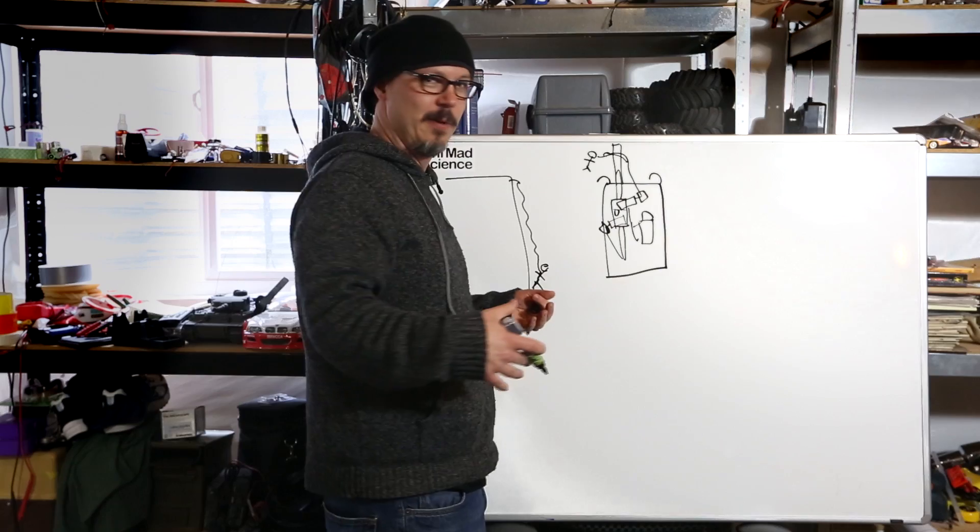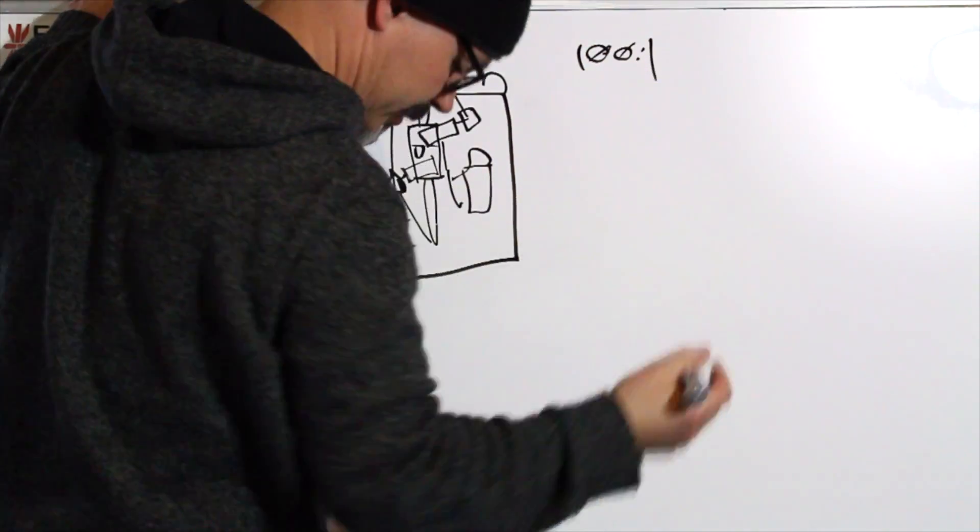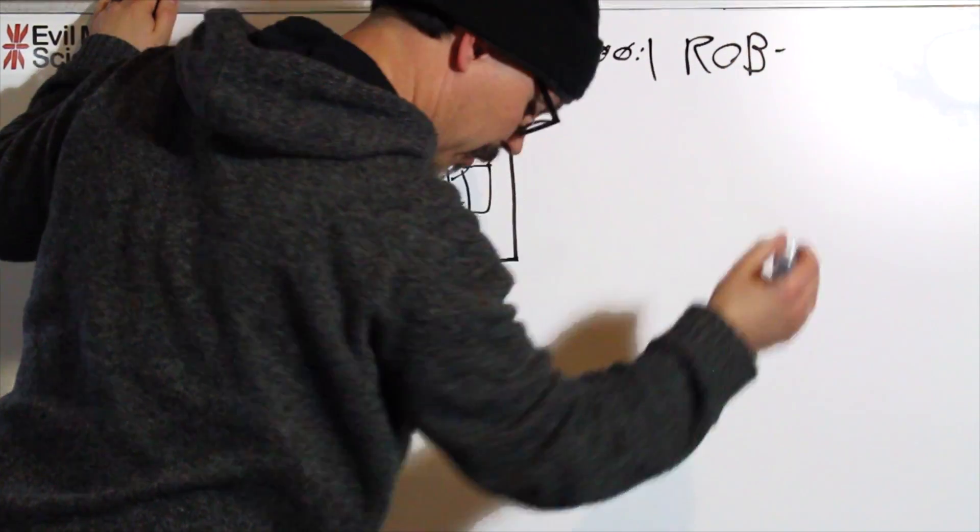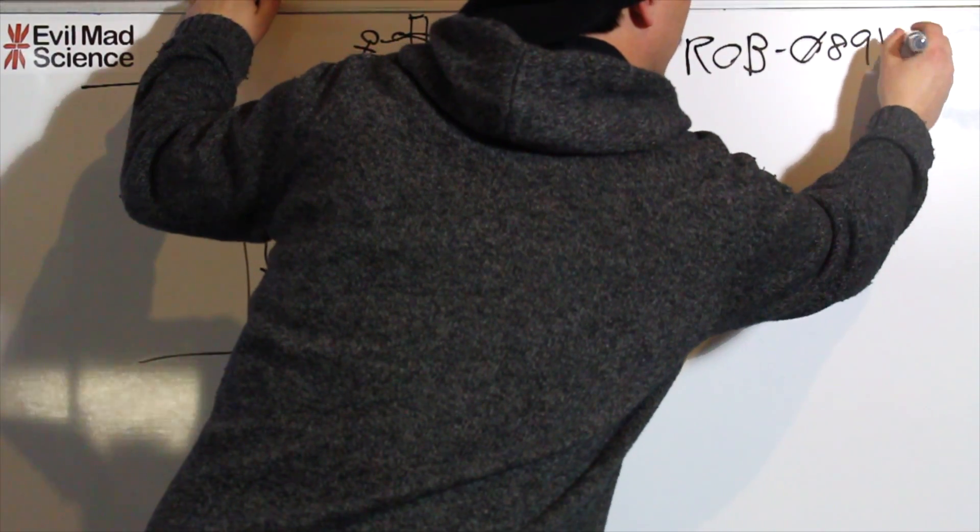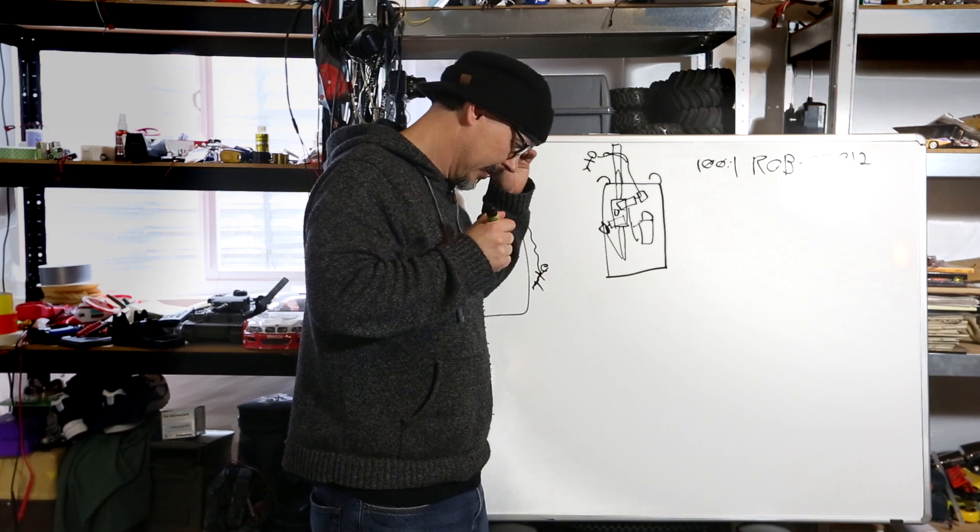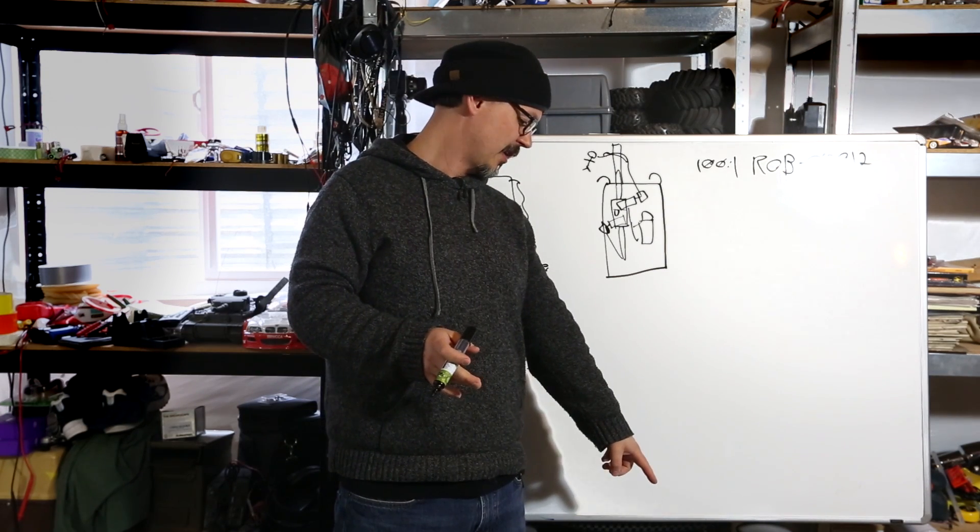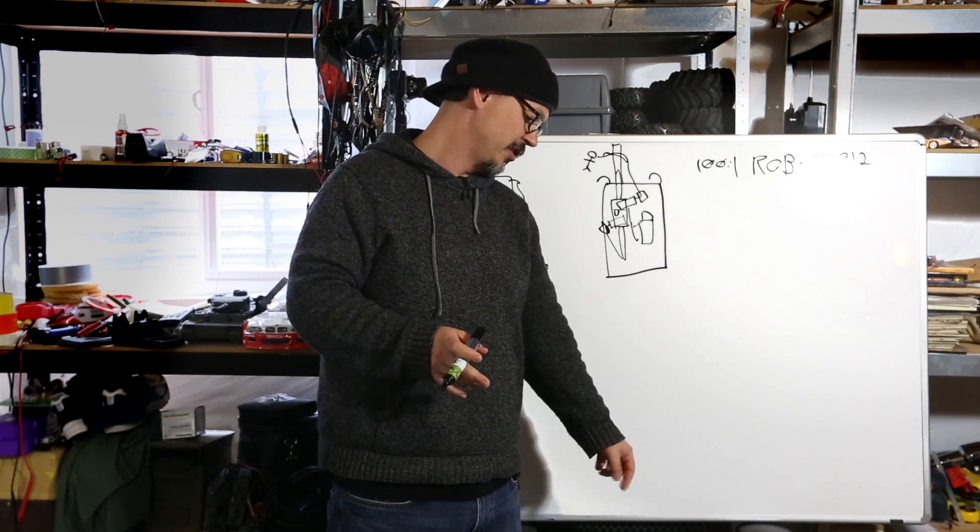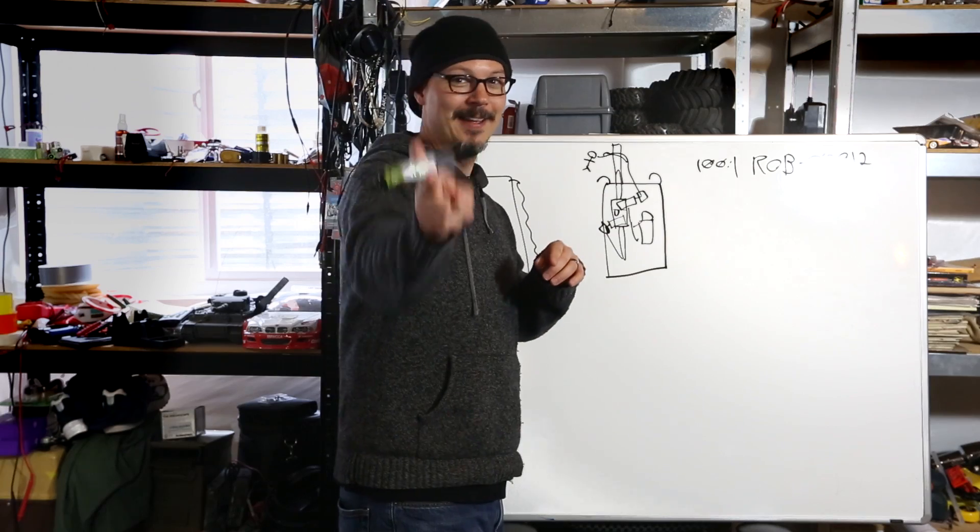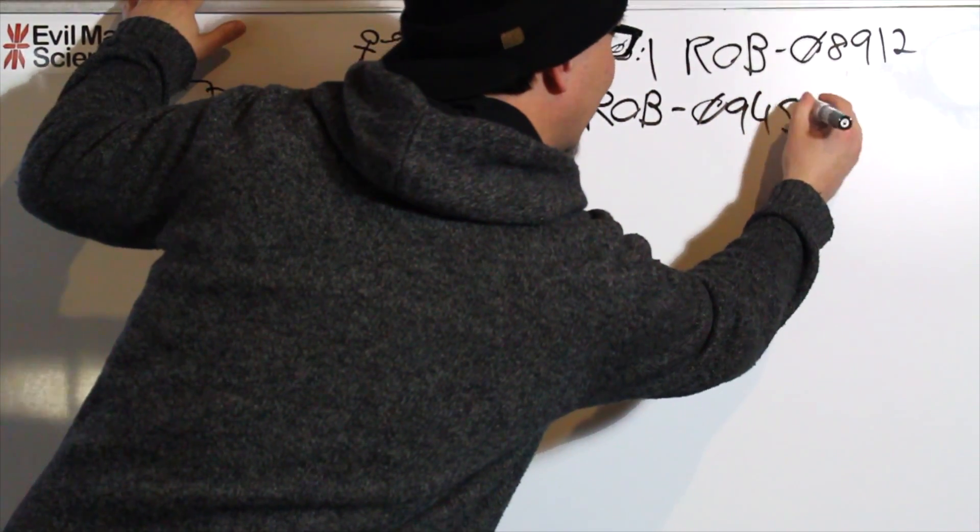Start with the motors. Those are probably the most important things there. So the motors are 100 to 1 geared, and the SKU Rob for robot 08912. To control those guys, we have a neat little motor driver. I'm sorry, I'm not looking at the camera, I'm looking at my nose. TB6612FNG two-channel H-bridge driver. It's cheap, and there's a builder example. Thank you, Adam Meyer. Rob09457.